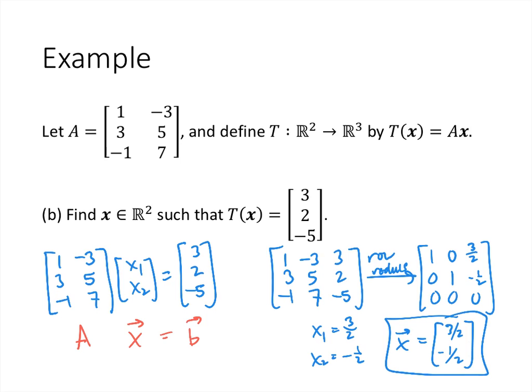This is sort of the opposite of finding an image — we knew what the image of x was supposed to be, we just didn't know what x was. So we say that x is the pre-image of the vector [3, 2, negative 5].